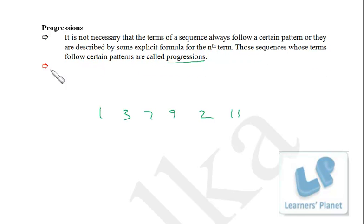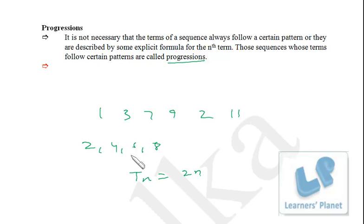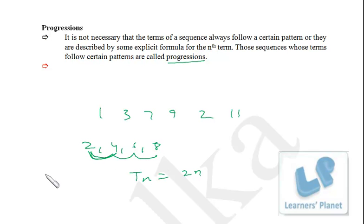When the terms of a sequence follow a certain pattern, we call those sequences progressions. For example, 2, 4, 6, 8 — the nth term is 2n. If you put n=1 you get the first term, n=2 gives the second term, and so on. Whenever we can define an nth term, we call that sequence a progression. If the difference between consecutive terms is the same, it is called an AP — arithmetic progression.